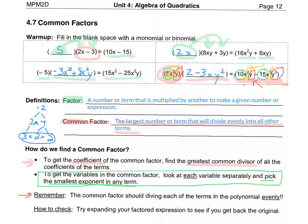Remember, the common factor should divide each of the terms in the polynomial evenly. To check if you've got the factoring right — it might not be the greatest common factor, but you can try expanding by multiplying your factored expression to see if you get back to the original. This is true for common factoring and for every kind of factoring we'll be doing. There are some examples you can try on the next section.